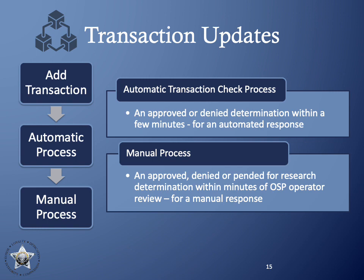Transaction updates using the API will be the same as using the traditional gun dealer portal. Depending on the background check and the data available to OSP, responses will continue to vary from automated to manual processing. Once a transaction is submitted, the API returns a transaction ID you can use to determine the latest status. When a transaction is successfully submitted, it will first go through an automated transaction check process. If that process can resolve the check, the transaction will be updated within a few minutes. If it cannot, the check will be resolved manually.